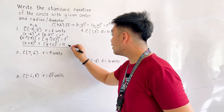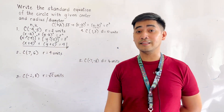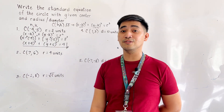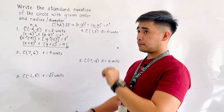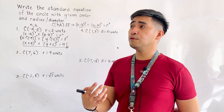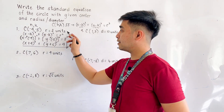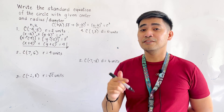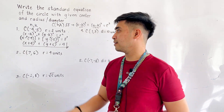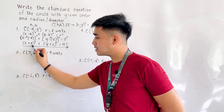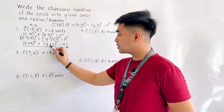And that is the standard equation of the circle with center at (negative 4, negative 5) and radius equal to 2 units. One technique here: if writing the standard form and given the center and radius, just get the opposite sign of the center coordinates. If the center value is negative 4, it becomes plus 4; if it is negative 5, it becomes plus 5.